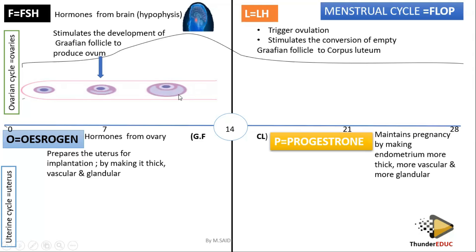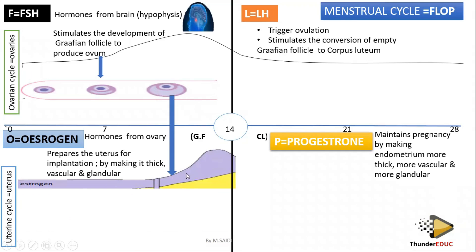Remember: the graafian follicle is very important. The ovum is there developing, but it doesn't stop there. When the graafian follicle develops, the graafian follicle produces oestrogen. You can see that oestrogen has been produced and starts increasing — but it does not increase unless follicle-stimulating hormone has increased first, because once FSH increases, it causes the development of the graafian follicle, which then starts to produce oestrogen.